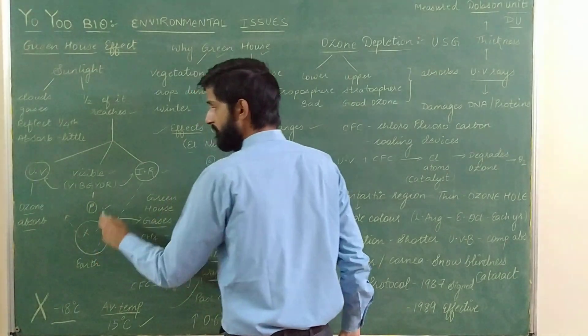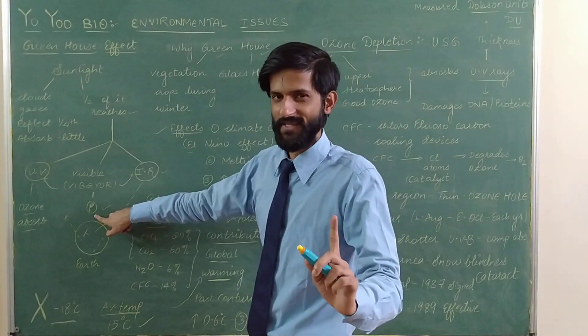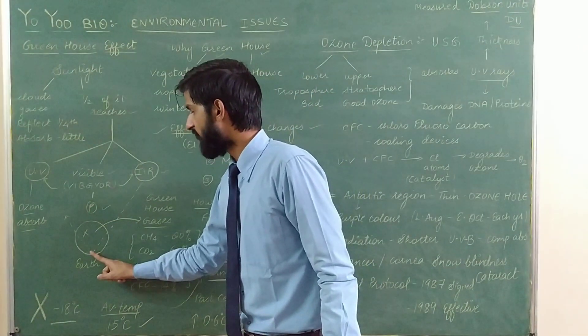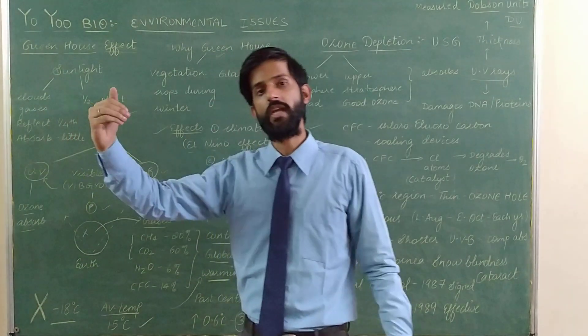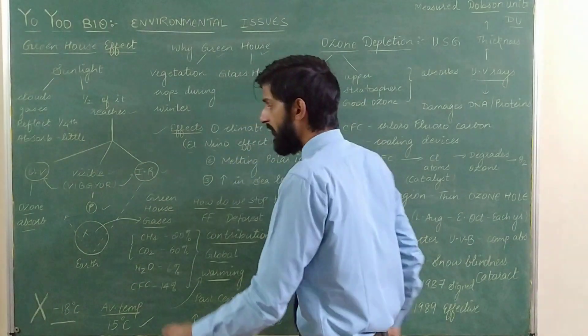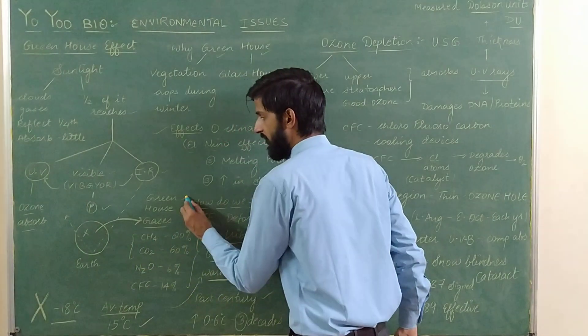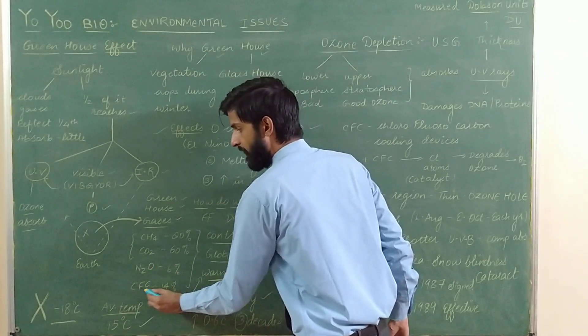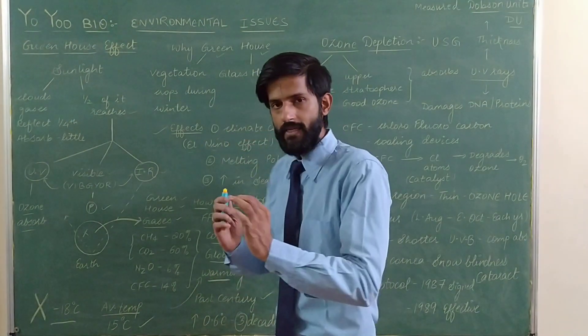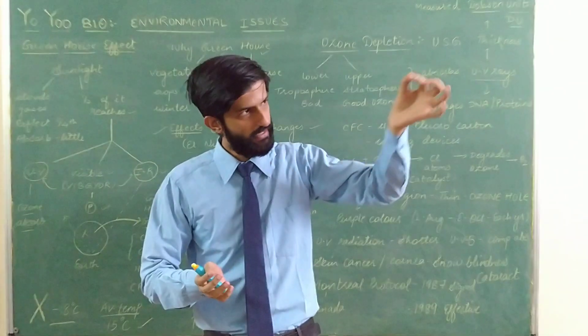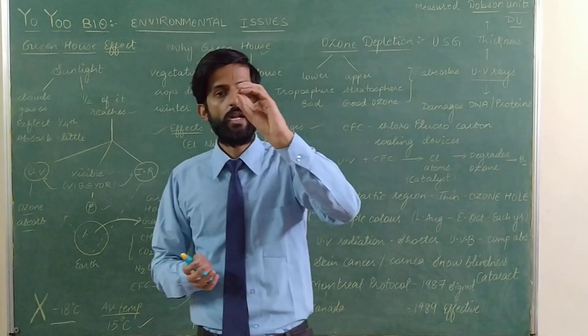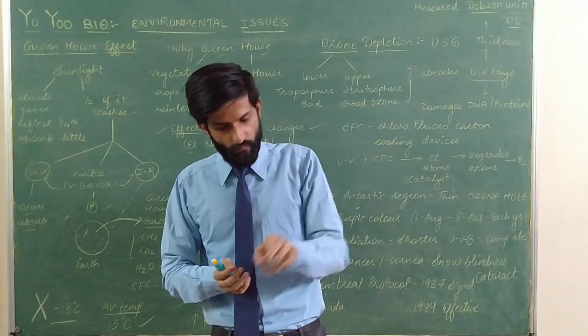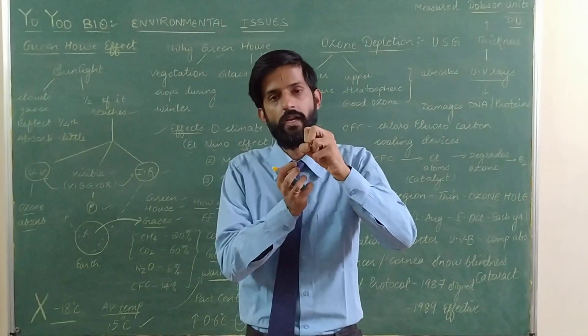UV rays are for photosynthesis. Infrared rays come to Earth, and normally they reflect off the surface and return to outer space. But if we have gases on Earth like methane, carbon dioxide, nitrous oxide, and CFC chlorofluorocarbon, these gases absorb the reflected infrared rays and trap heat.